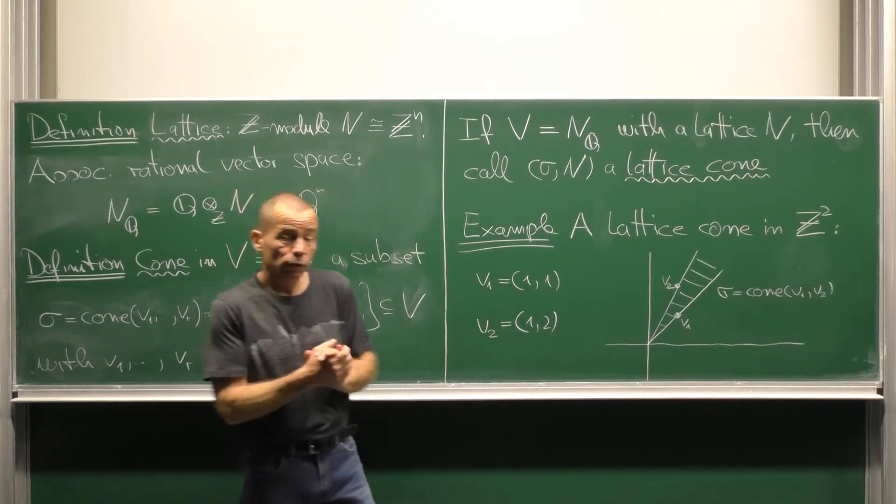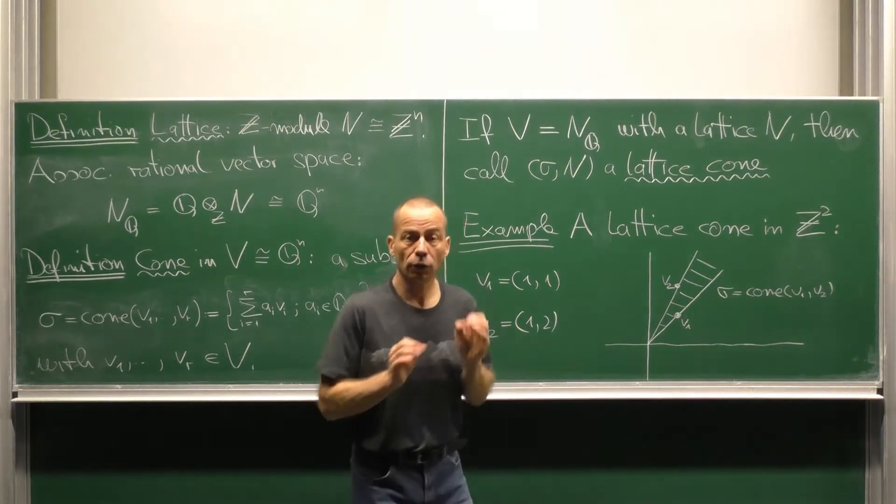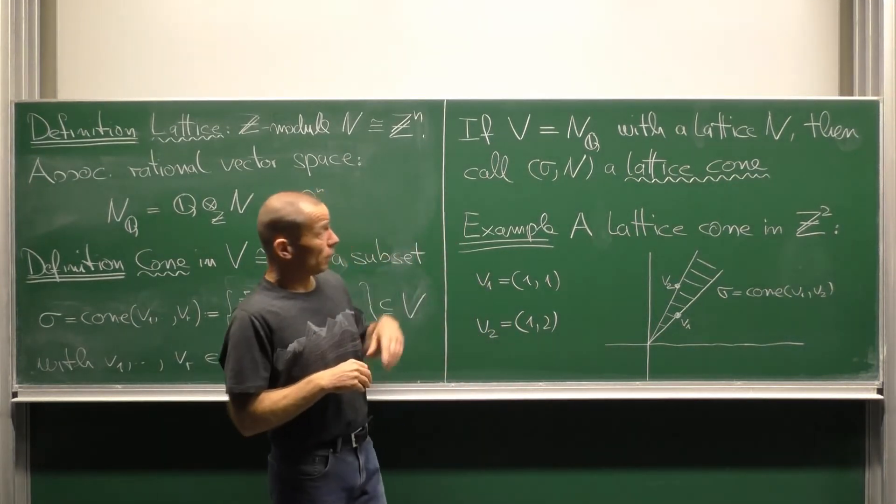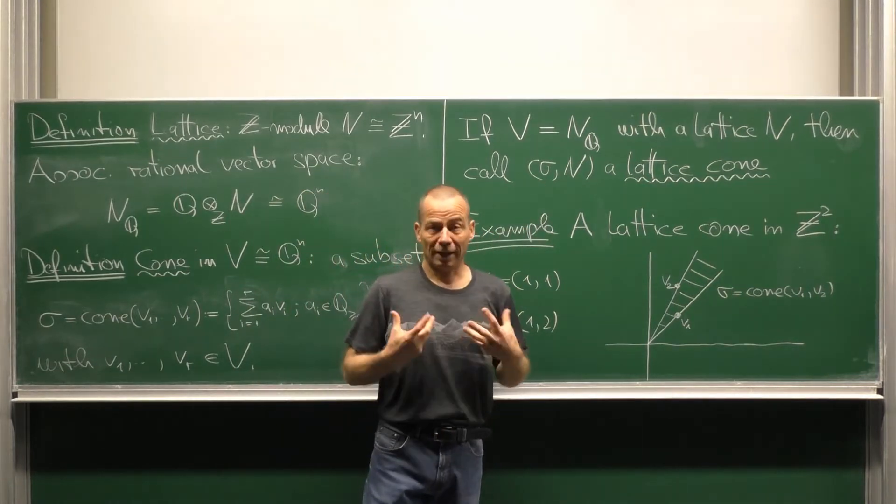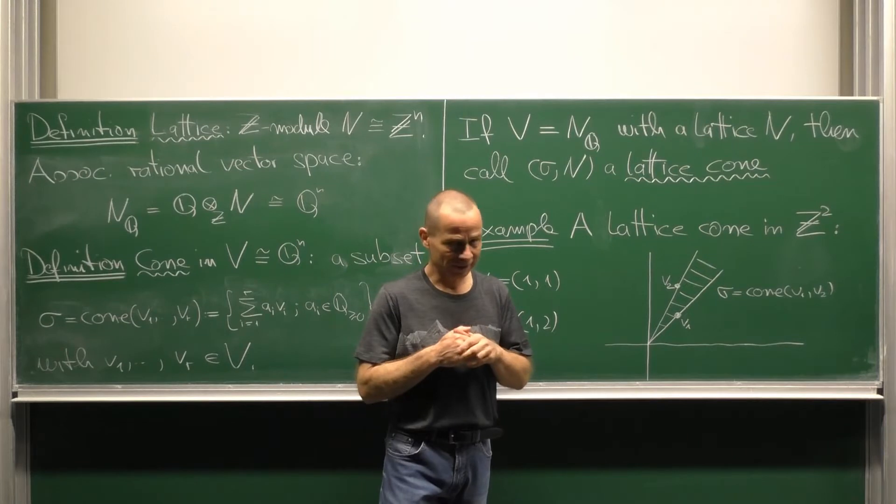If our v is of the form Nq, so the rational vector space associated with the lattice N, then we call the pair sigma and N also a lattice cone and we say that sigma is a cone in the lattice N.